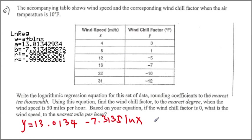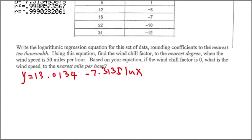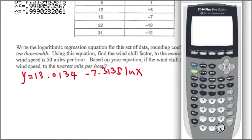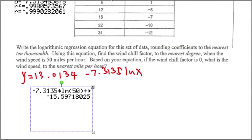What is the wind speed to 50 miles per hour? When the wind speed is 50 miles per hour, we're going to find out the wind chill. Then, all you have to do is plug in 50 in place of x. So, here we have negative 7.3135 and multiply that by a length of 50 and plus 13.0134. And that's the value we end up getting. The nearest mile per hour. So, then our answer would be about negative 16 miles per hour.